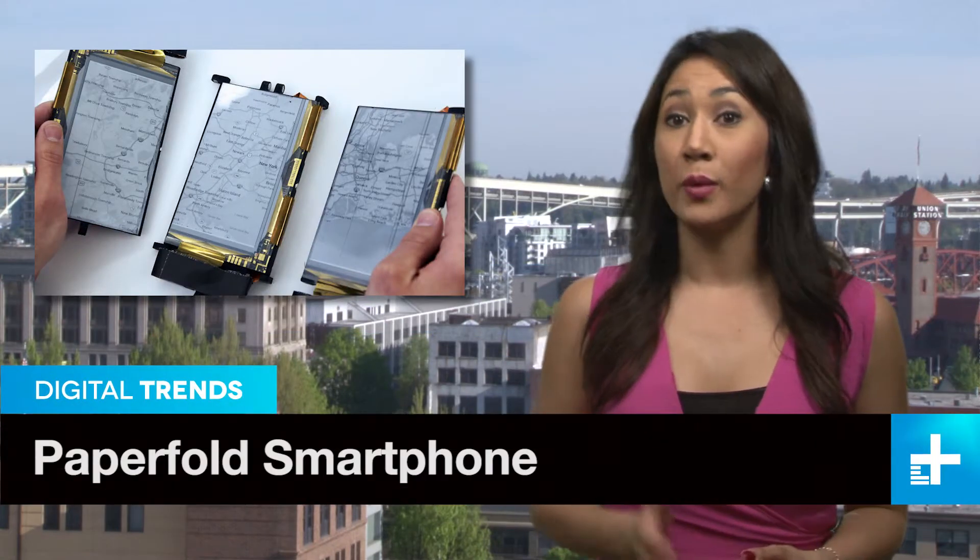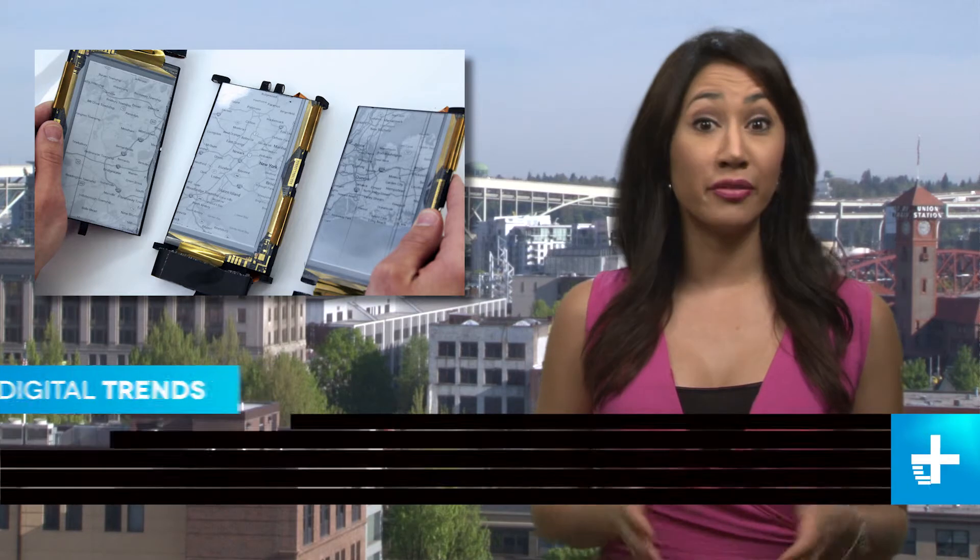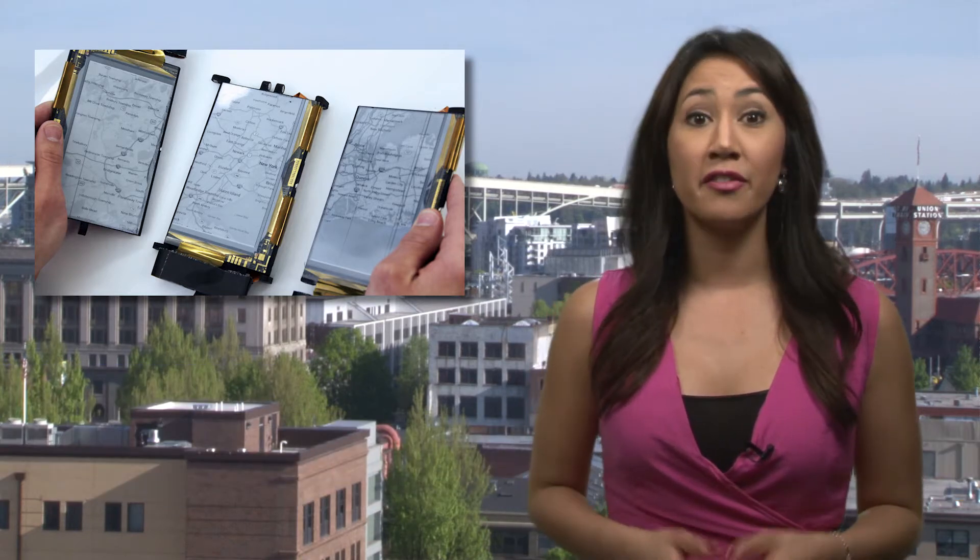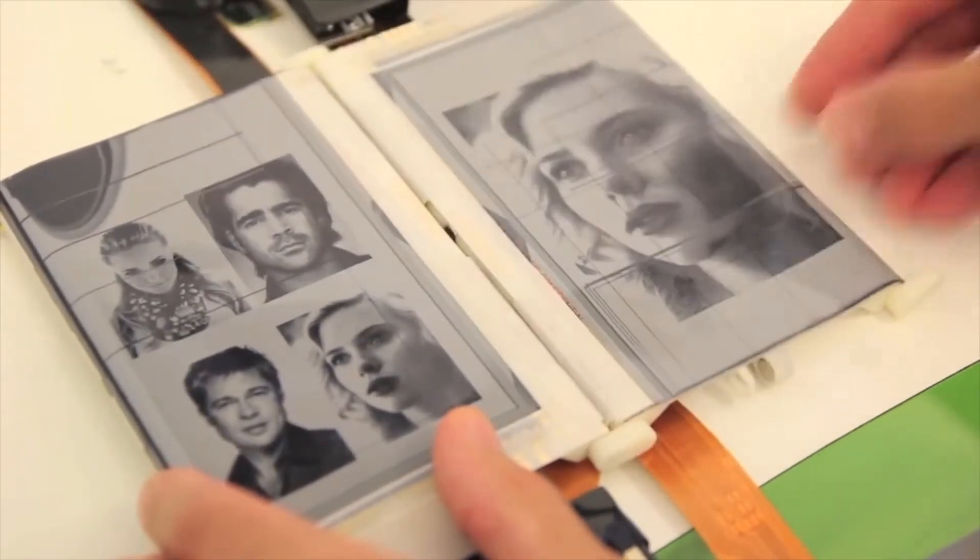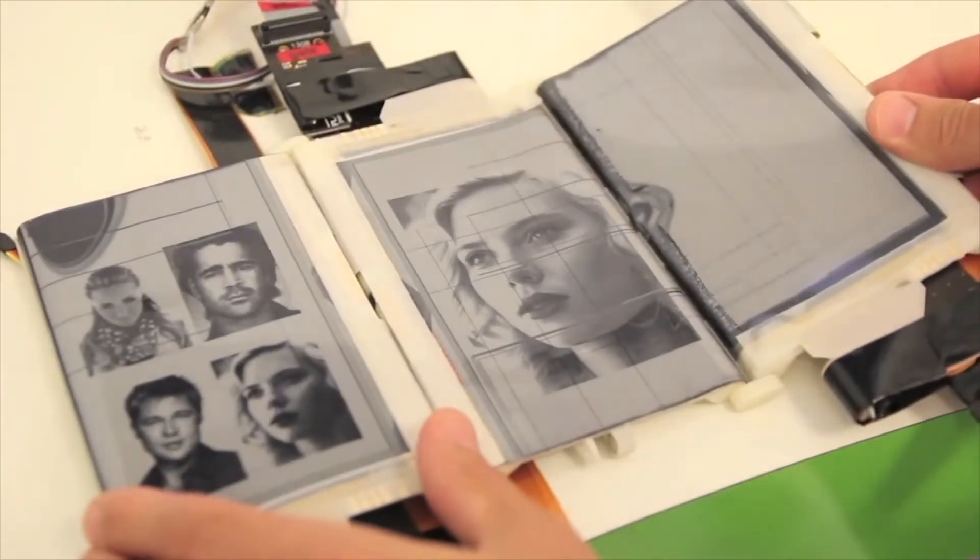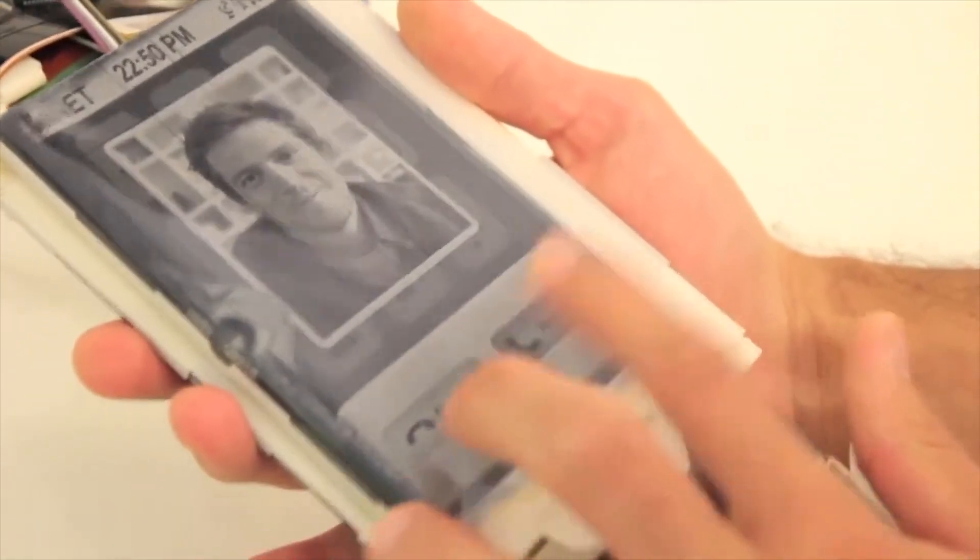In a radical rethink of what a smartphone could be, researchers at Canada's Human Media Lab have developed a rough prototype of a flexible paper-fold smartphone. This proof-of-concept shows three e-ink panels that can be attached and folded into a variety of configurations. The multiple displays allow a user to multitask on a device the size of a normal smartphone.